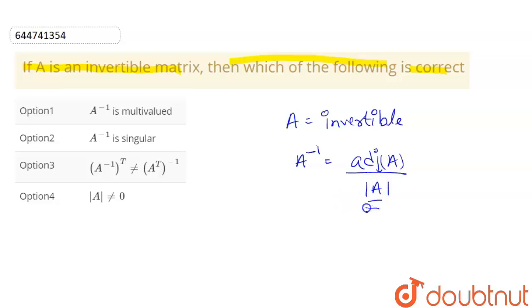So A determinant cannot have a value 0, because if it has a value 0, this becomes infinite. That means our option 4 is correct that A determinant cannot be 0.